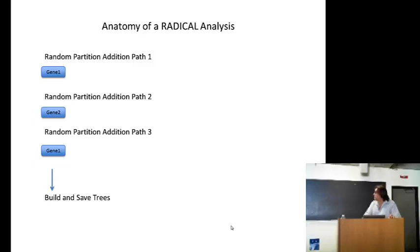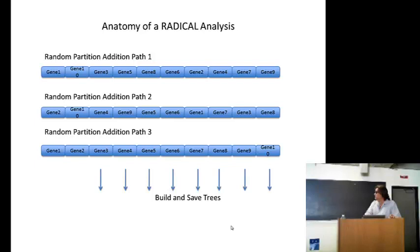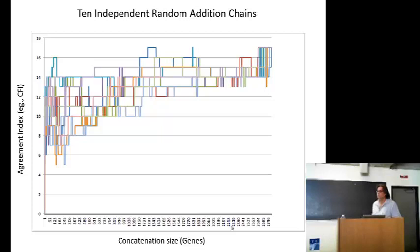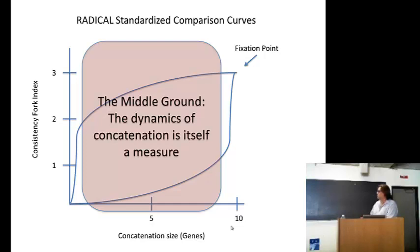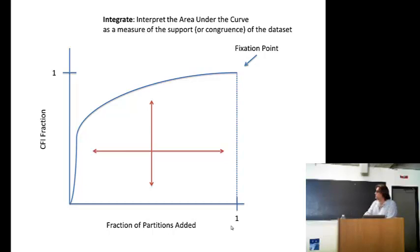And this is interesting in and of itself, but you want to be able to treat this statistically, so what we do is we randomize. We do multiple random addition partitions, build and save the trees, and then we get a graph for that, and then we can use statistical methods to smooth the curve. And what happens with data sets that have high consistency is you get a curve that looks like this, a curve that reaches the highest consistency that it can reach relatively quickly after a small number of concatenation events. And if you have a data set that's crappy, you get something that looks like this.